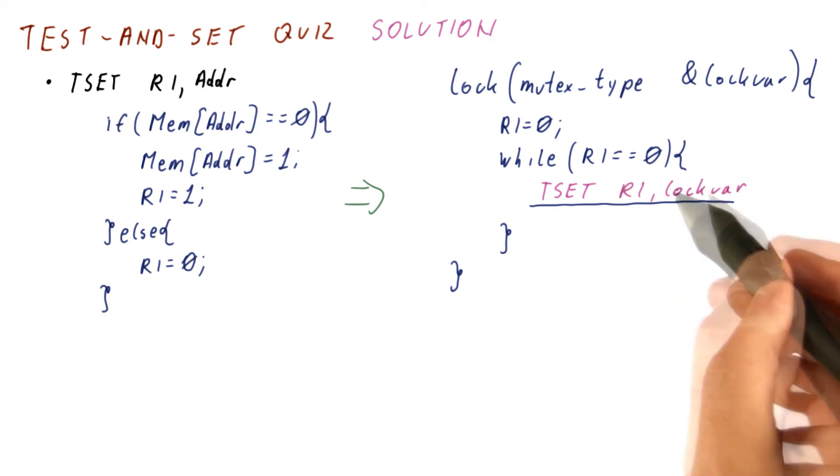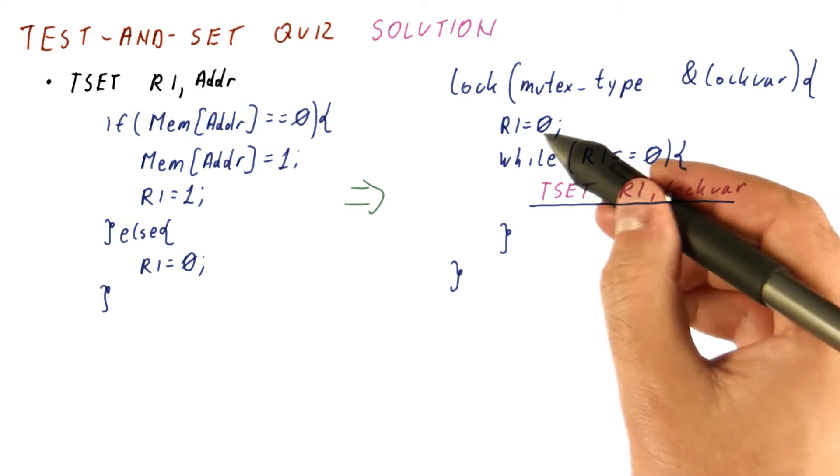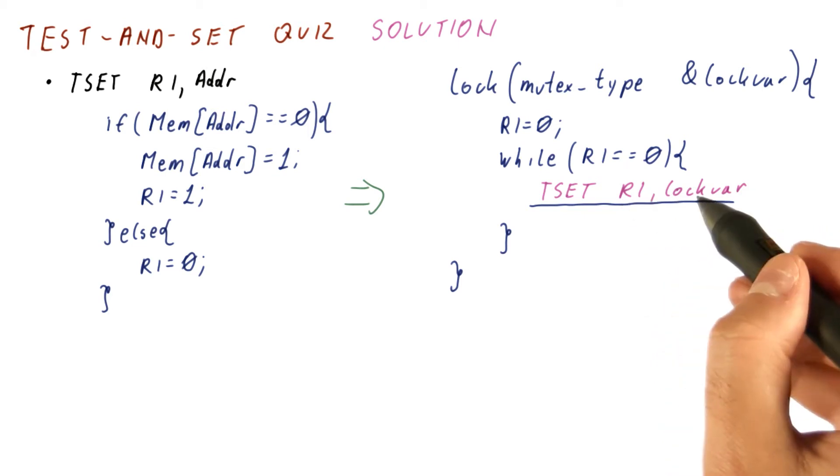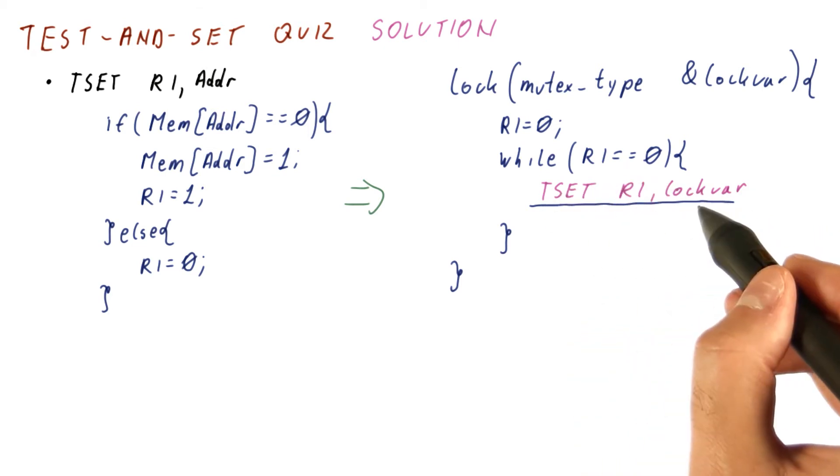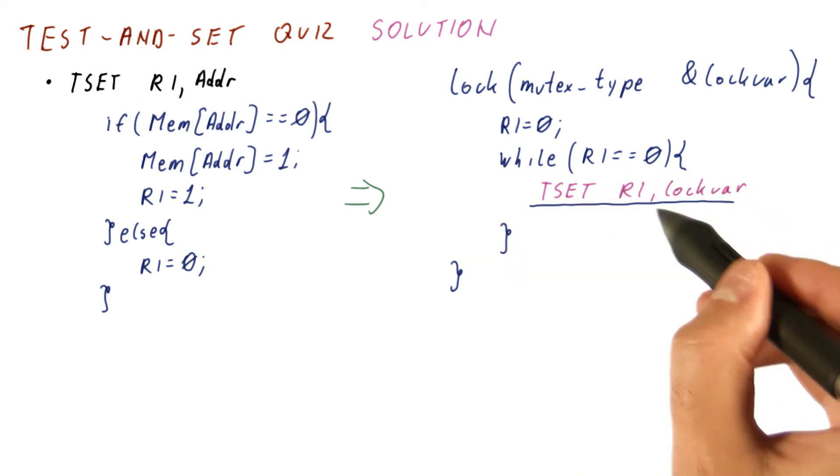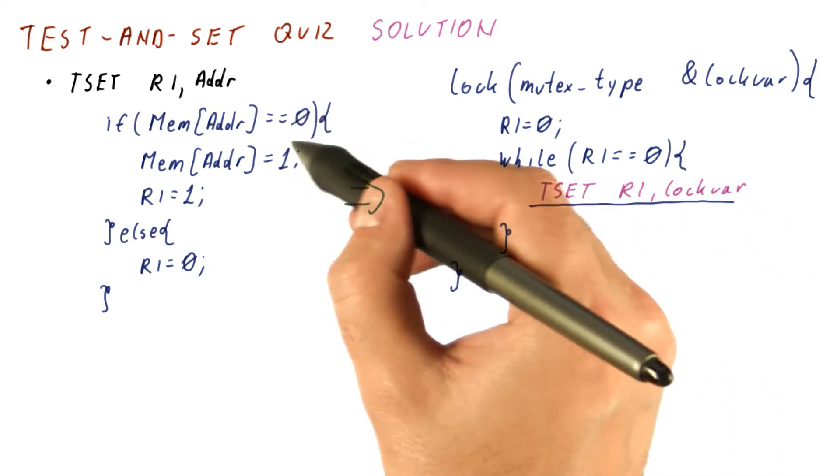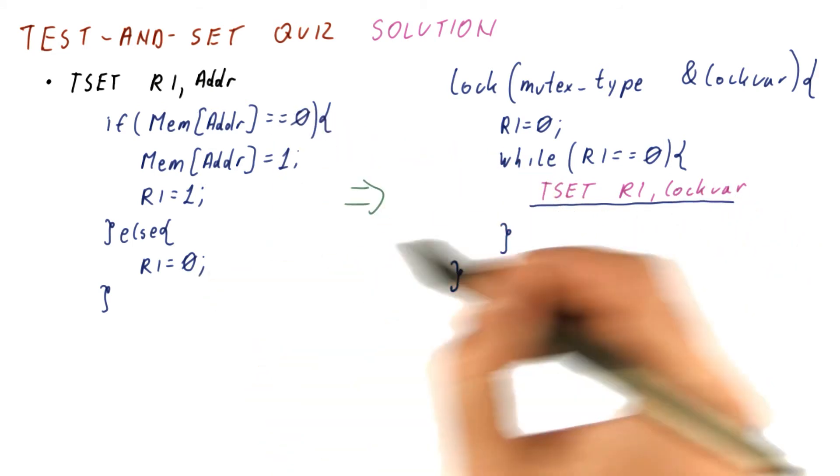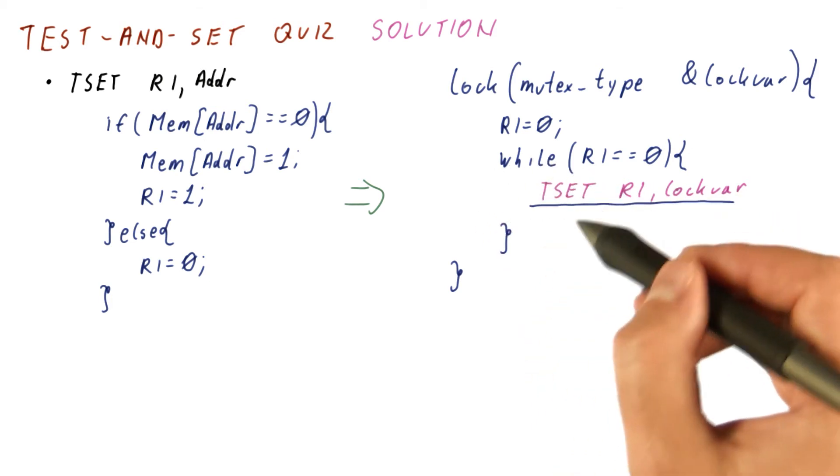So what happens is, our R1 starts out at 0, so we will enter this first iteration of the loop. If the test and set finds the lock busy, it's going to read lockvar, see that it's not 0, returns 0, and R1 stays 0 and we keep looping.